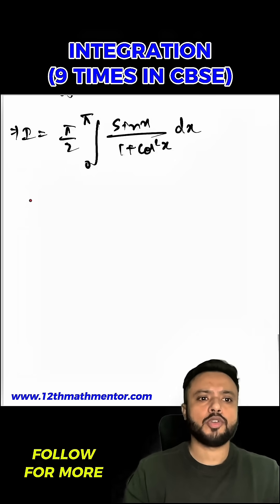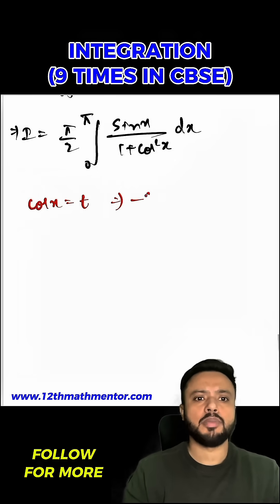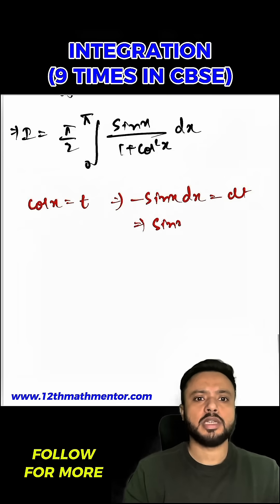Now to solve it further, I am going to put cos x as t, which gives minus sin x dx equals dt, hence sin x dx equals minus dt.